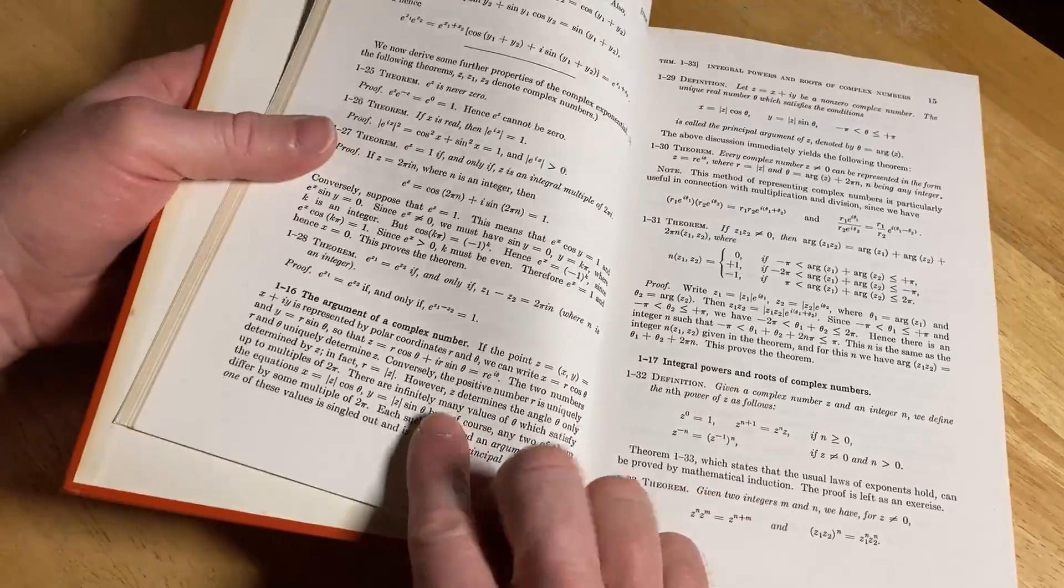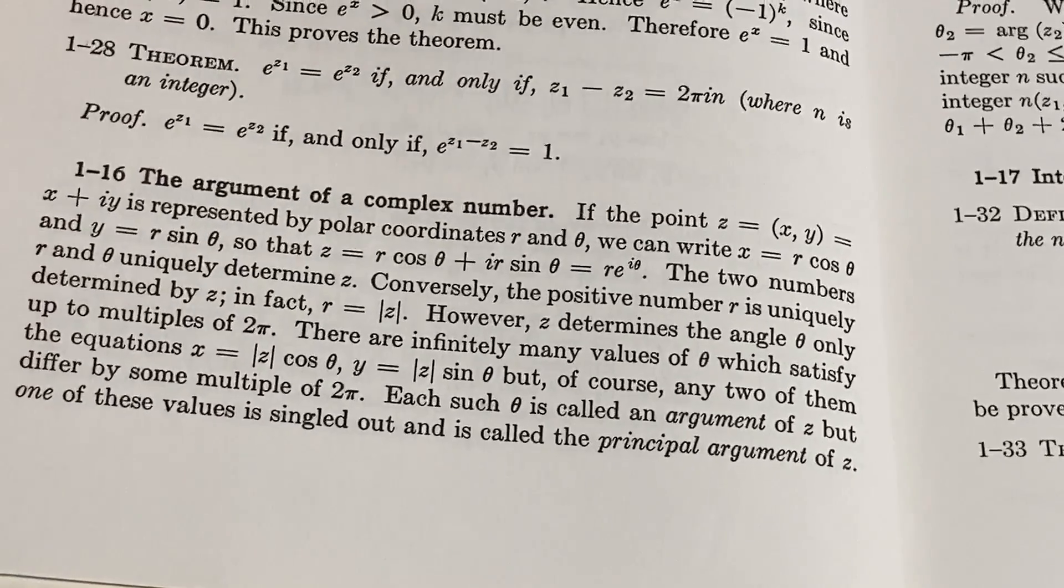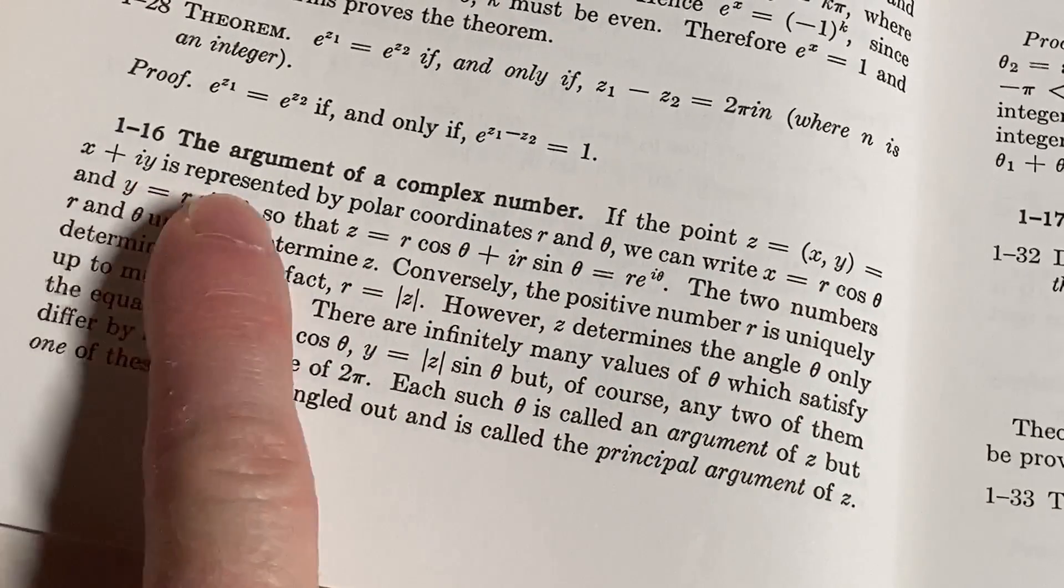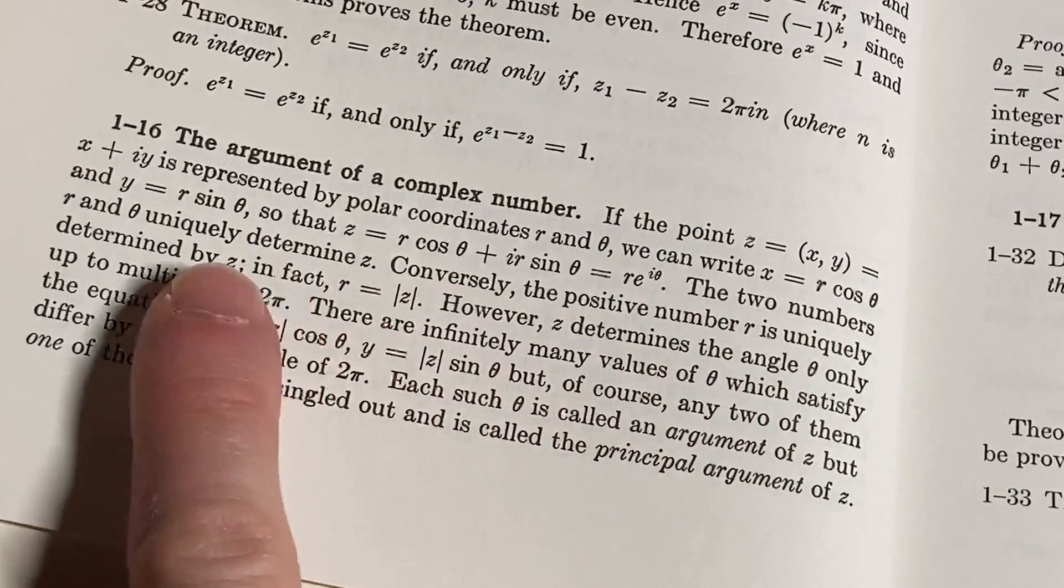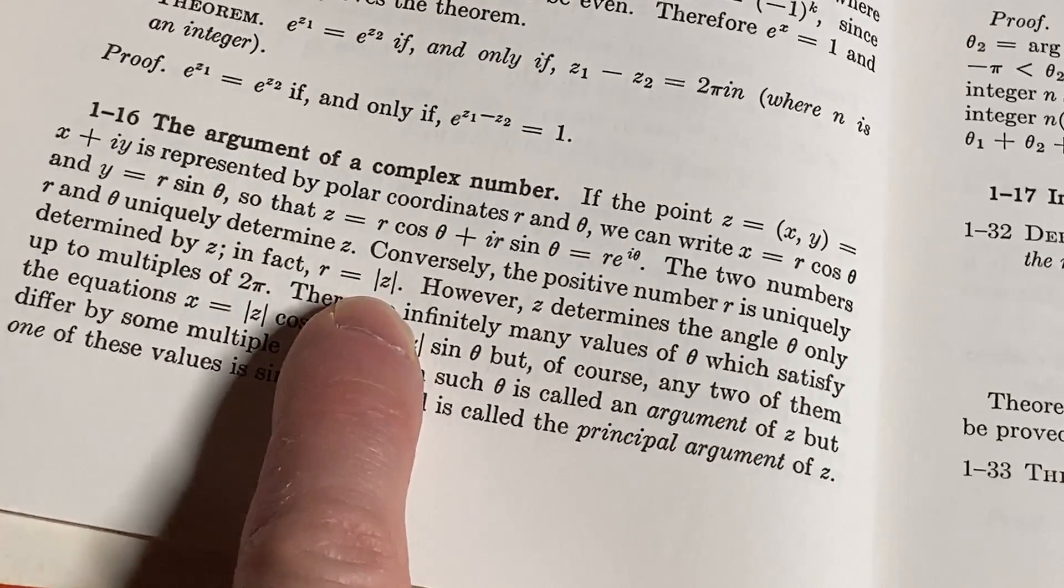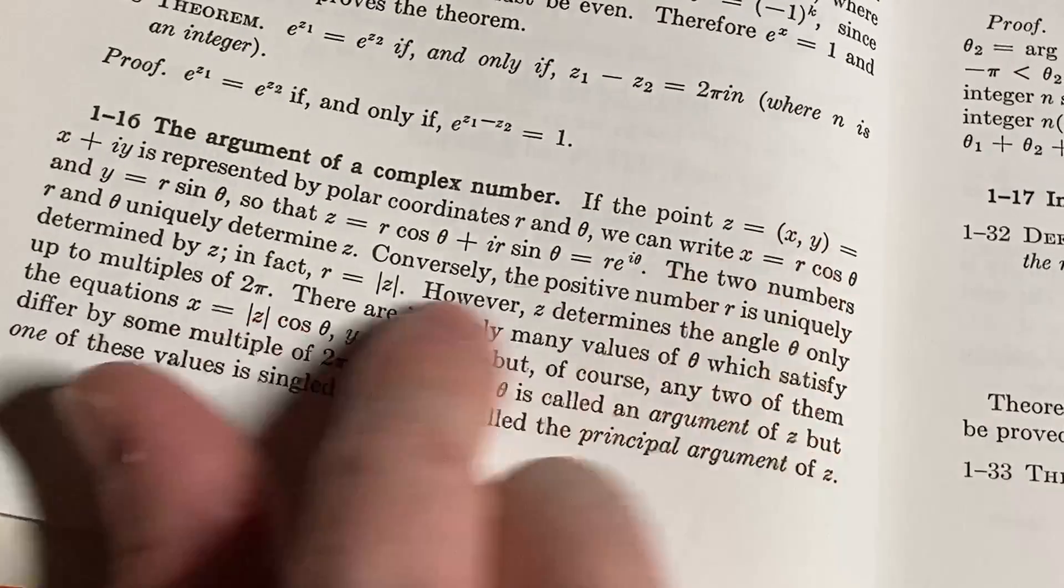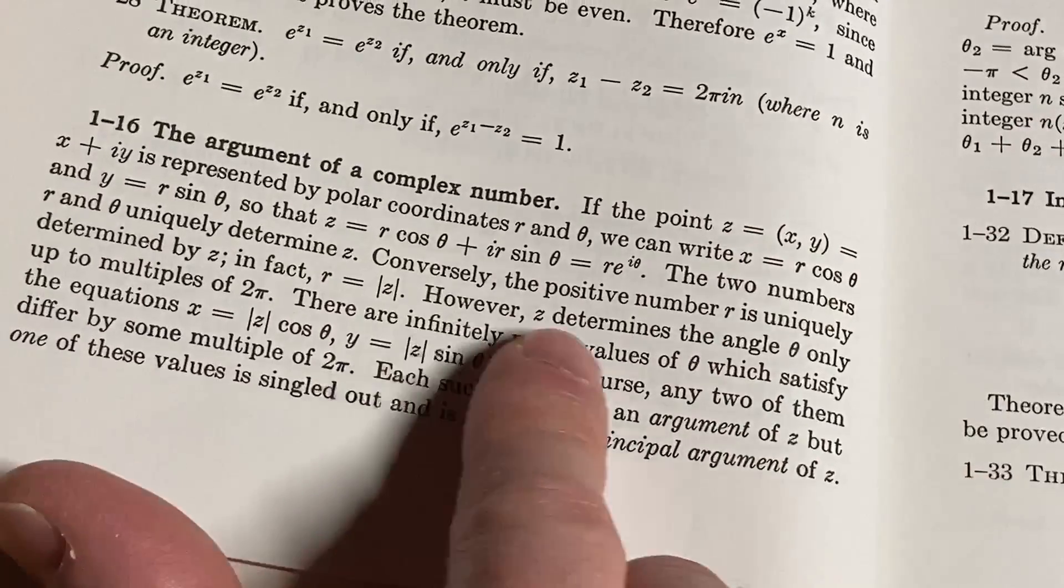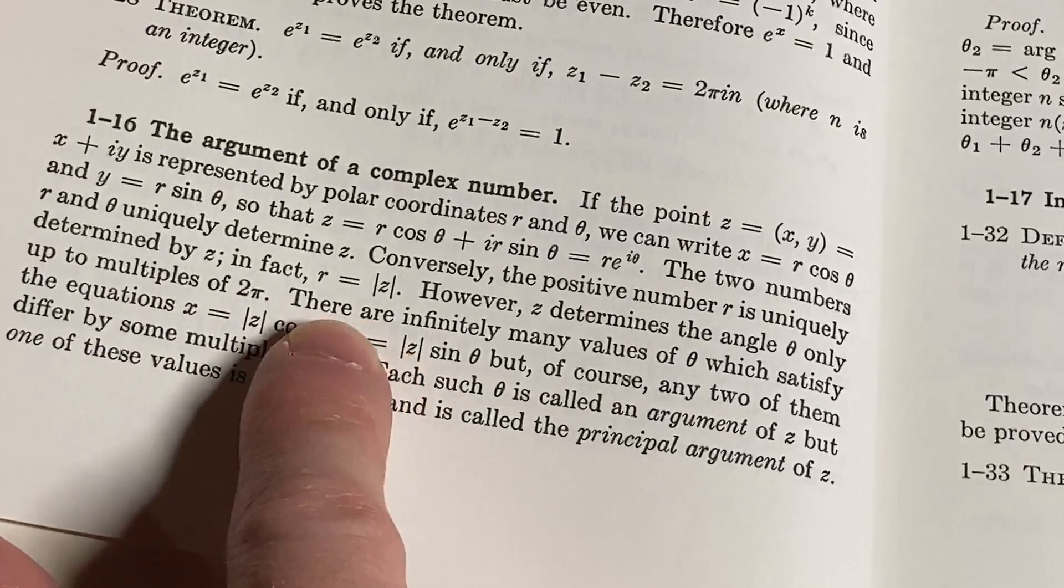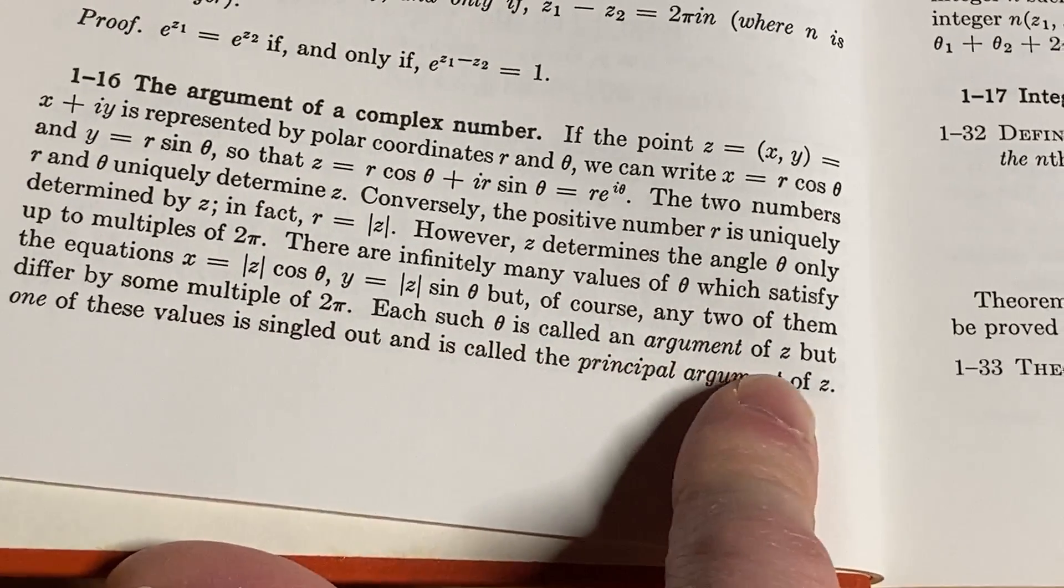You can see here how they just, here's the argument of a complex number. Let's take a look at this. This is really useful and interesting. And it explains how to get various things in complex analysis. If the point z equals x, y represented as a complex number x plus iy. So, you write it in polar form. The two numbers, r and theta, uniquely determine z. Conversely, the positive number r is uniquely determined by z. In fact, r is equal to the modulus of z. That's what that is. It's the distance. So, if you plot the complex number on a complex plane, that's going to be the distance from, when you think of it as an ordered pair, to the origin. That's going to be the modulus of z geometrically, okay?